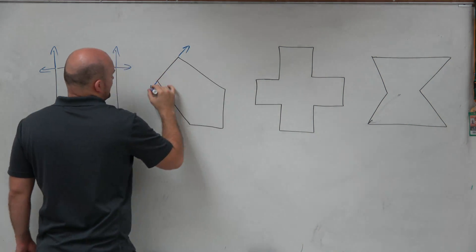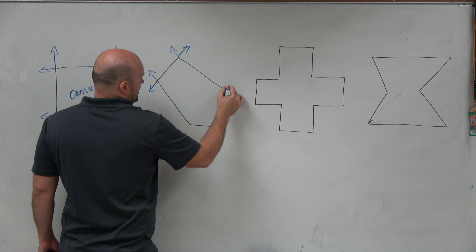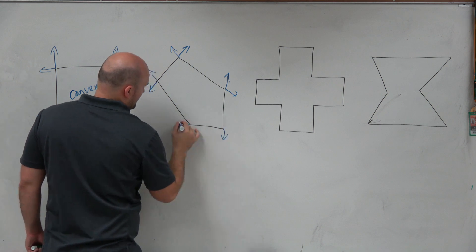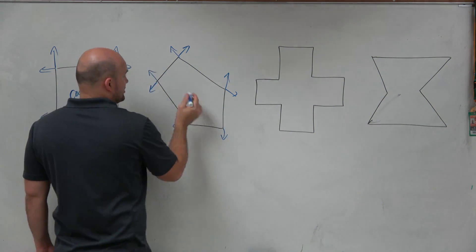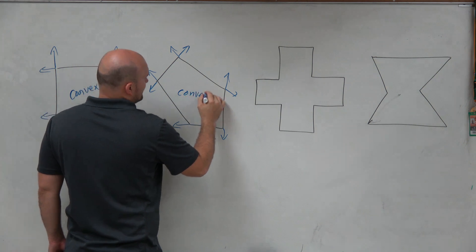I'll do it for this one over here, which kind of looks like this weird polygon, but it looks pretty good here. OK, so again, nothing enters in the interior, so we have convex.